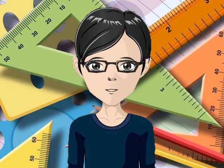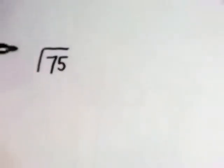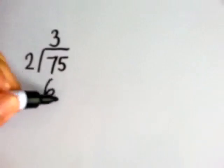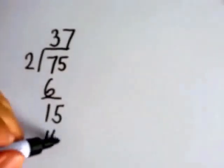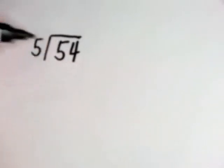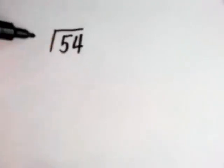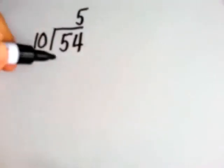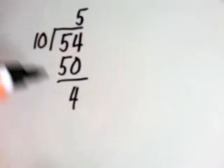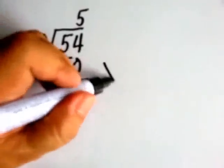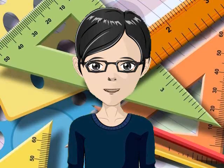So ano naman yung not divisible? Now 75 is not divisible by 2 because when you divide it by 2, you'll get a remainder 1. 54 is not divisible by 5 because when you divide it by 5, you'll get a remainder 4. So kapag i-divide mo ang isang number tapos may remainder, hindi ito divisible sa number na yon. Okay?